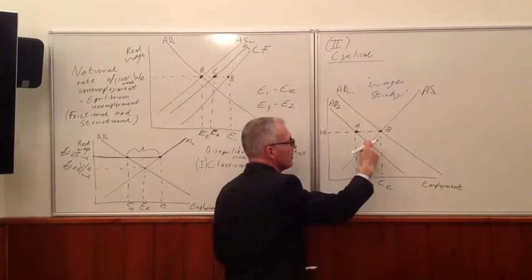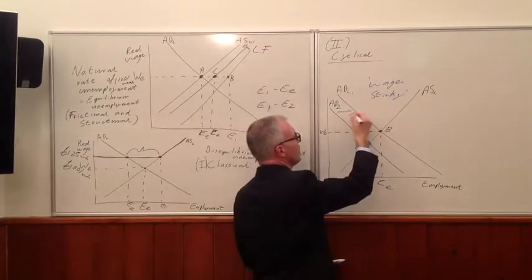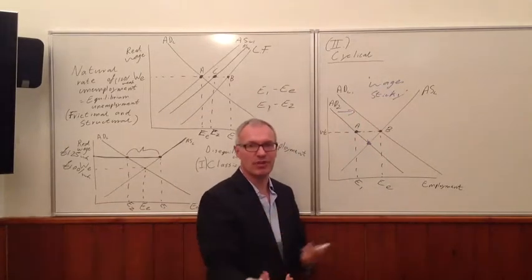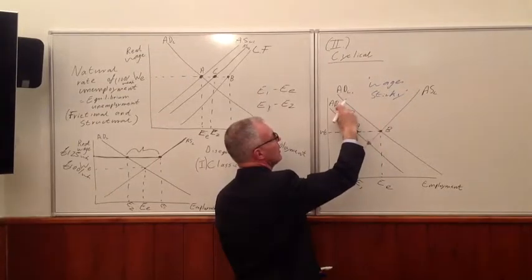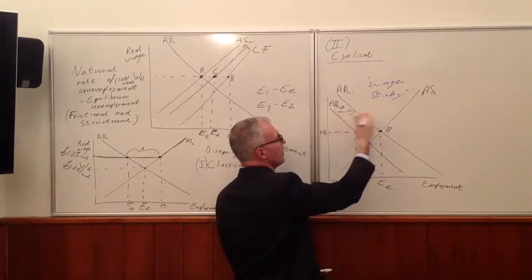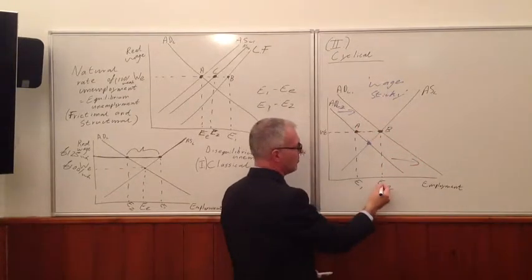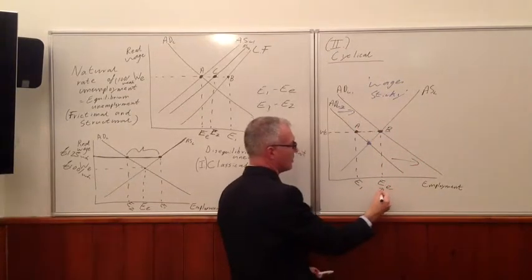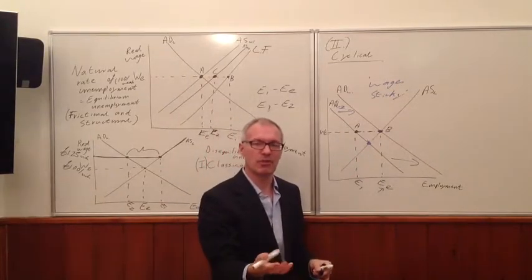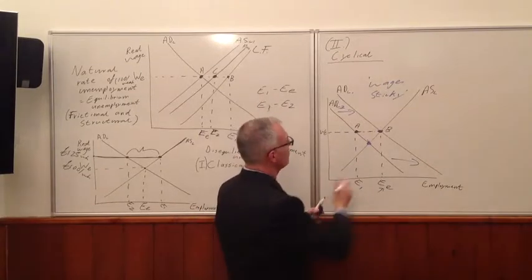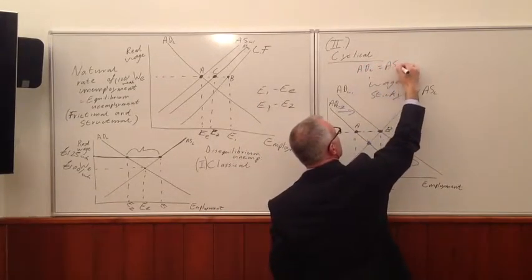And so if that doesn't happen, another solution might be a shift back with a reflationary fiscal and or a reflationary monetary policy. We shift aggregate demand for labour, we shift back to this position here. And we move back here to our situation of full employment. And the situation of full employment means there are still people unemployed. It's simply when the aggregate demand for labour equals the aggregate supply for labour.